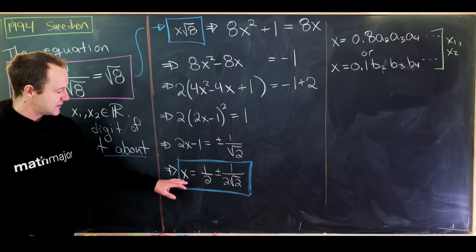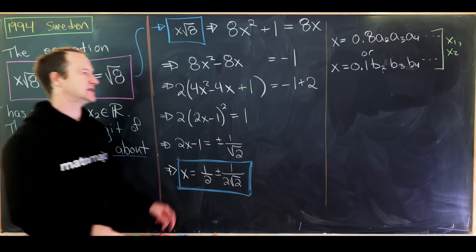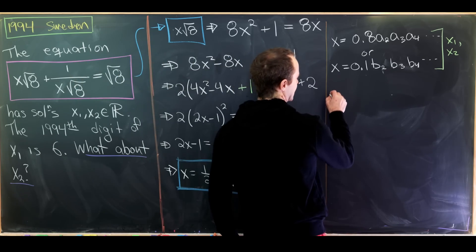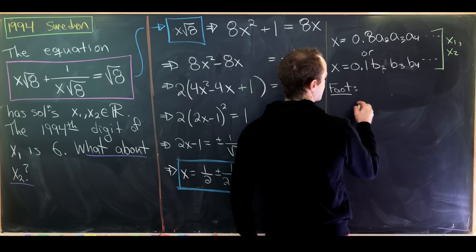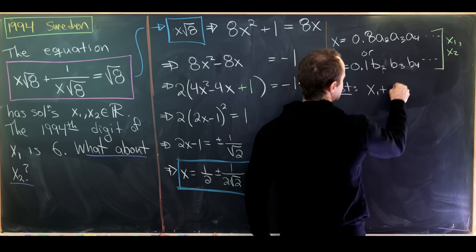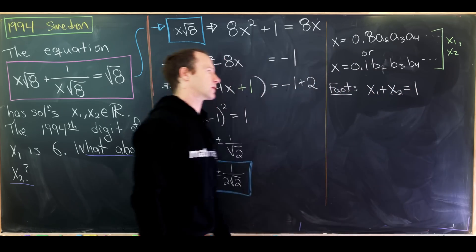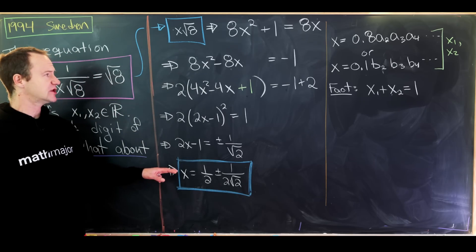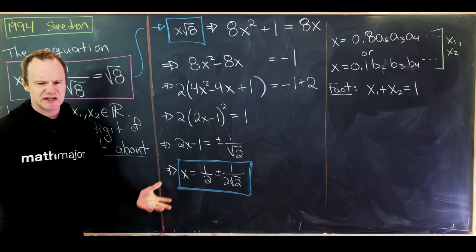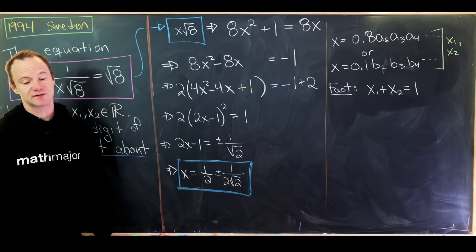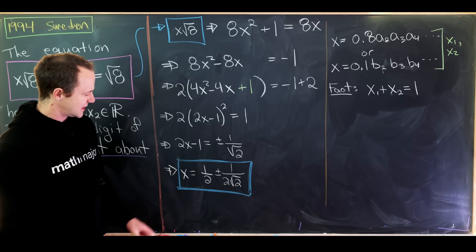Another thing that we know from this format of x is the sum of x1 and x2, and I'll write this as a fact. We have x1 plus x2 is equal to the number 1. We actually could have gotten that without solving the equation just using something called Vieta's formula. But now here comes the tricky part.